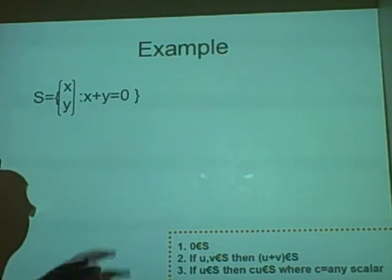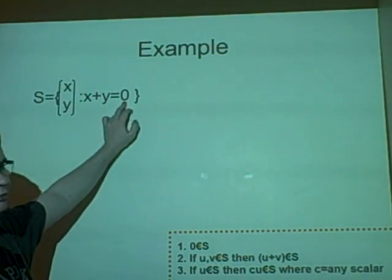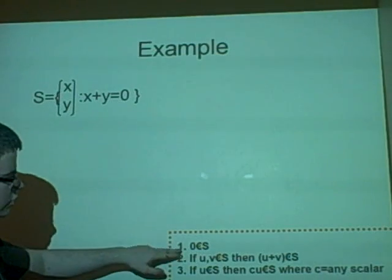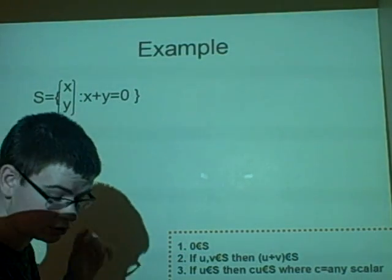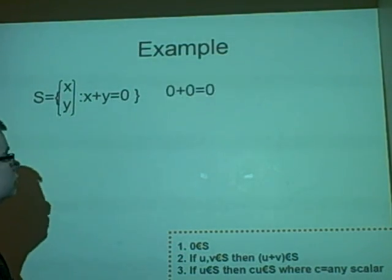Next example. It's just the same, but equals zero. So, with our zero matrix again, we have zero plus zero does equal zero. So, that first rule is true.